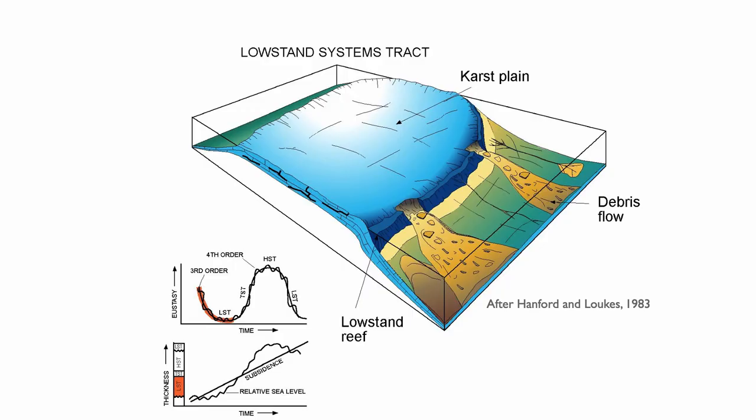Let's look at some block diagrams and start with the low stand system track. During the low stand system track, sea level is low. The carbonates on these atolls or isolated platforms need to grow close to sea level, so even a few meters of relative sea level drop will expose the former reef and the former carbonates of the high stands. It's very easy to expose them.